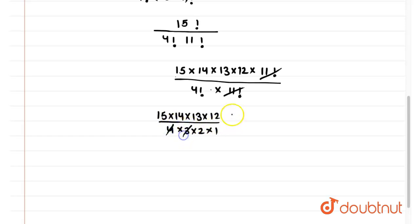4 and 3, 12, 2 and 7. We are left with 15 into 7 into 13. So what is 15 into 7 into 13?